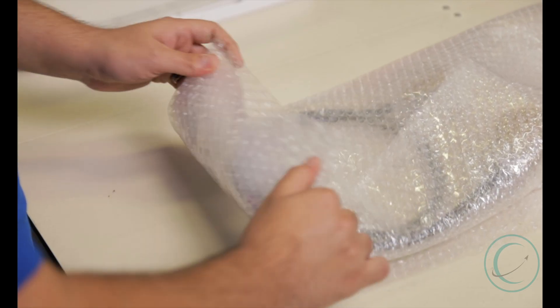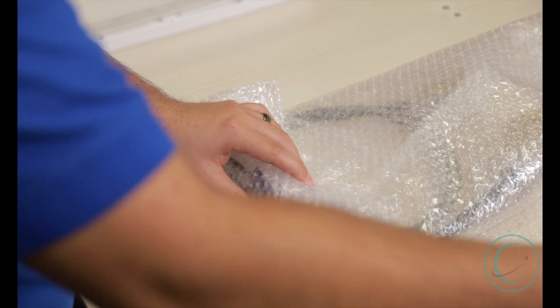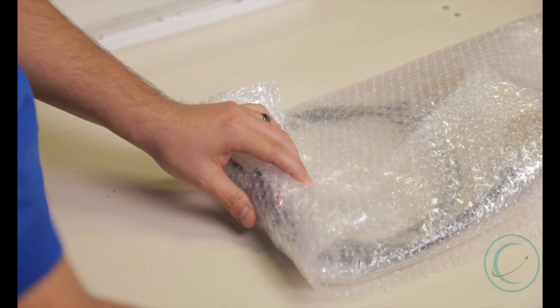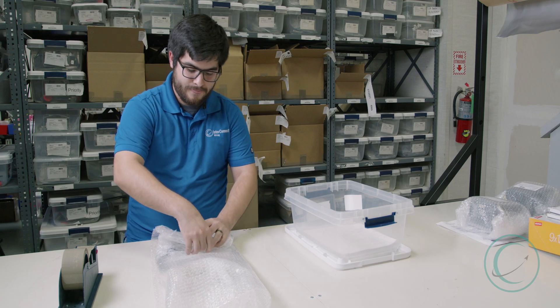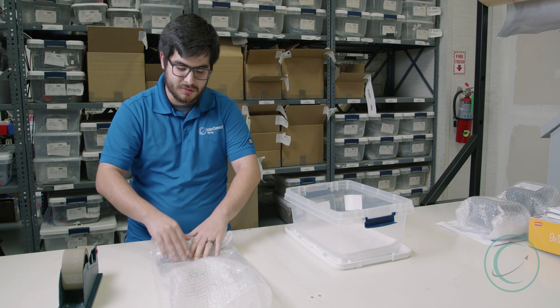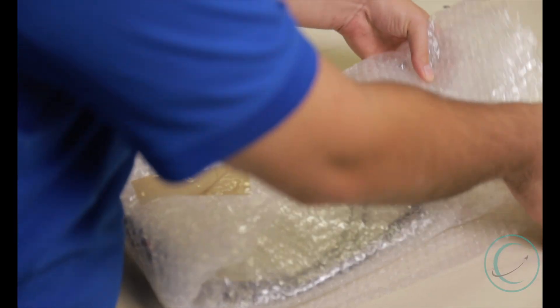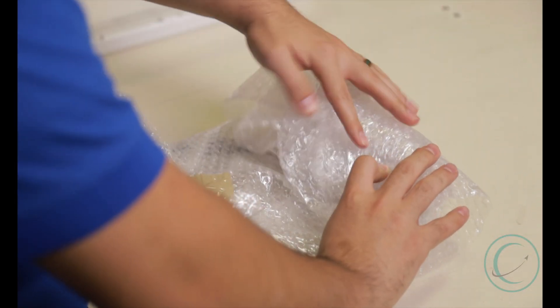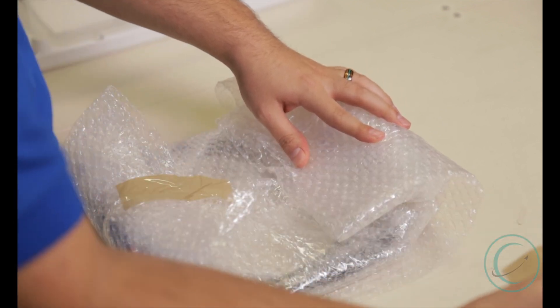And now, we'll fold off the sides by curling it in using a small piece of tape. Again, this is to protect the harness from any kind of damage you can come across during transit. We want to make sure that our product gets to the customer in perfect condition.